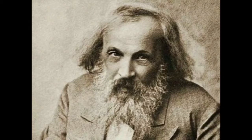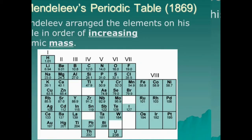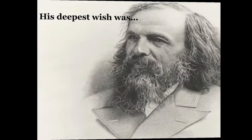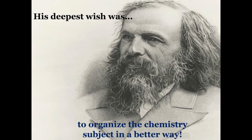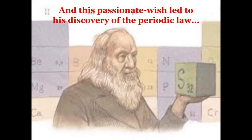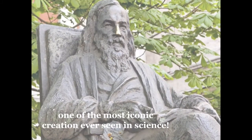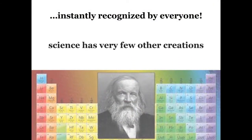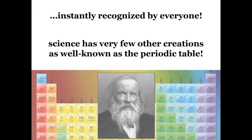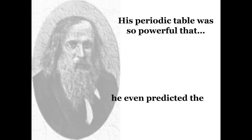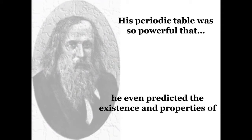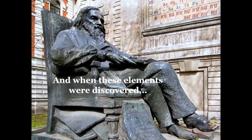In 1869, Russian chemist Dmitri Mendeleev arranged 63 elements by increasing atomic mass in several columns, creating Mendeleev's periodic table. He was passionate about chemistry and his deepest wish was to organize the subject in a better way. This passionate wish led to the creation of the periodic table, one of the most iconic creations ever seen in science. His periodic table was so powerful that he even predicted the existence and properties of new chemical elements, and when these elements were discovered, his place in the history of science was assured.